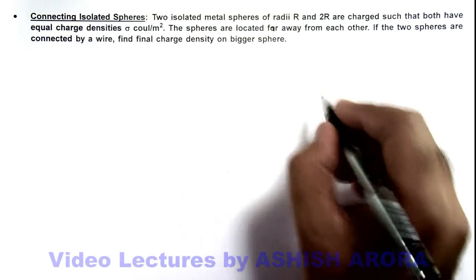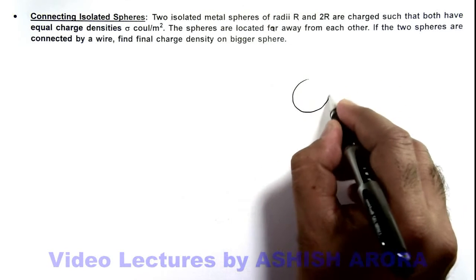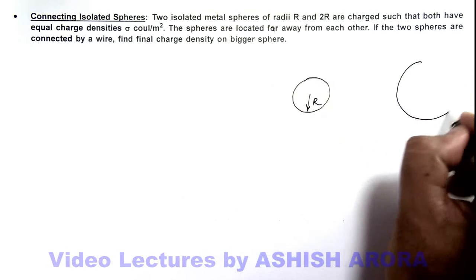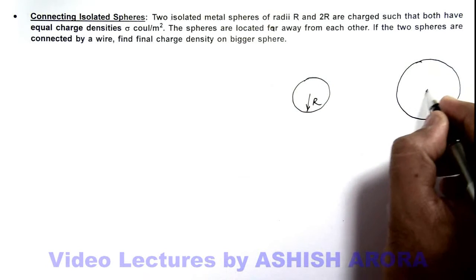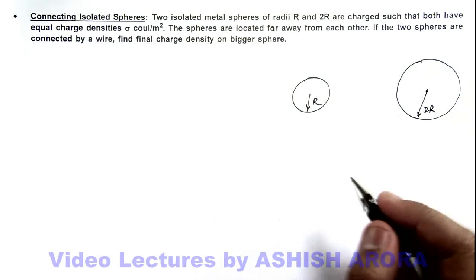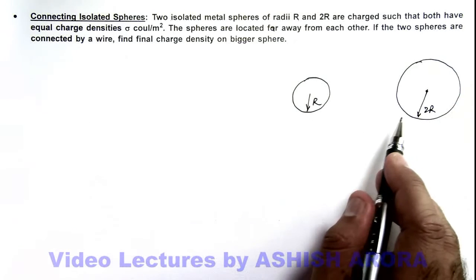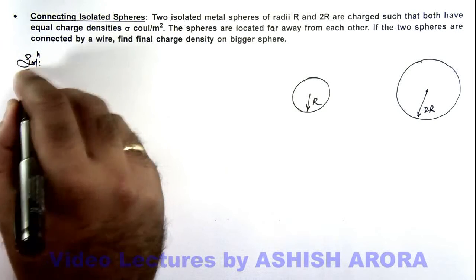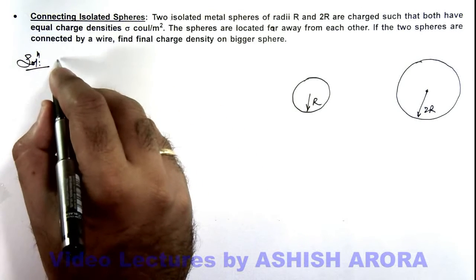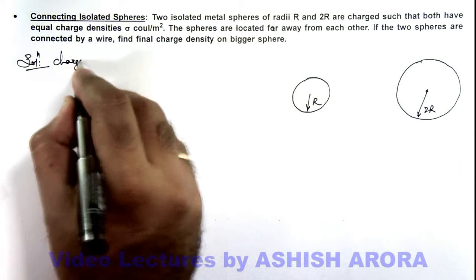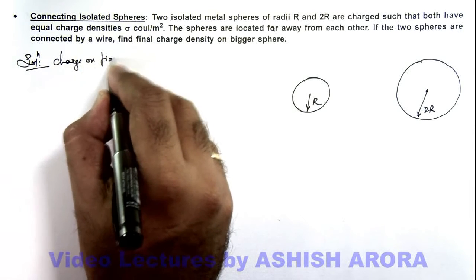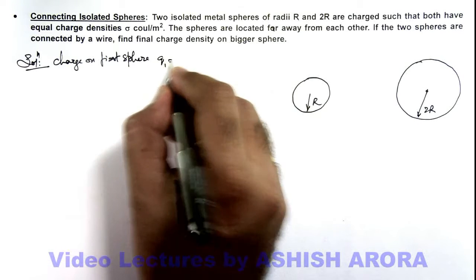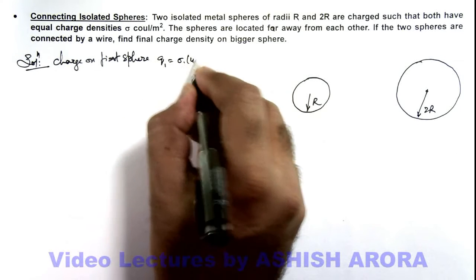So here we can draw the situation. We are given that there is a sphere of radius R, and another sphere of radius 2R. If we talk about the charge, the surface charge densities are equal. So we can write, if sigma is the surface charge density, charge on the first sphere, which is the smaller one, can be written as Q1 equals sigma multiplied by 4πR².